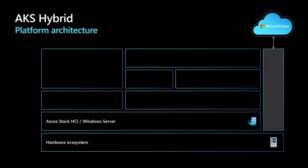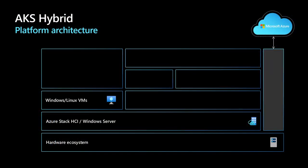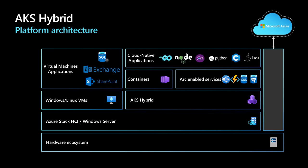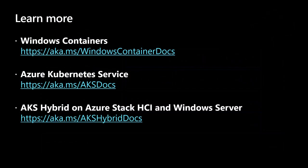Let's have a quick look at the AKS hybrid architecture, which allows you to run Azure Kubernetes Service on-premises and at the edge. You choose one of our validated hardware solutions for Azure Stack HCI or use Windows Server, which lets you run Windows and Linux VMs with traditional applications. With AKS hybrid deployment options, you can also run containerized applications with Linux and Windows containers, as well as Arc-enabled services — letting you run PaaS services from Azure on-premises or at the edge to build cloud-native applications, all managed through Azure Arc. Check out the following links to learn more about Windows containers, Azure Kubernetes Service, and AKS hybrid deployment options.